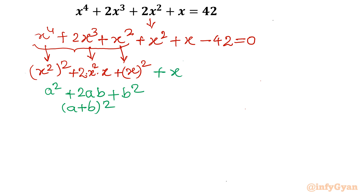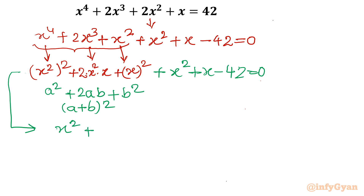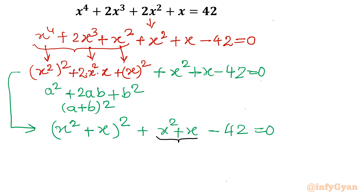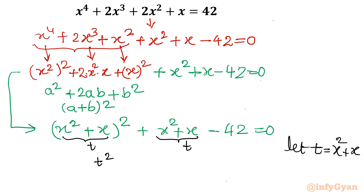So the remaining terms as it is: (x² + x)² + x² + x − 42 = 0. Now I am going to give a substitution, and the substitution is clearly visible. If I consider this term t, this is nothing but a quadratic in x² + x. So let t = x² + x.